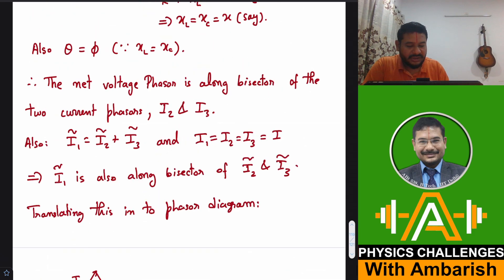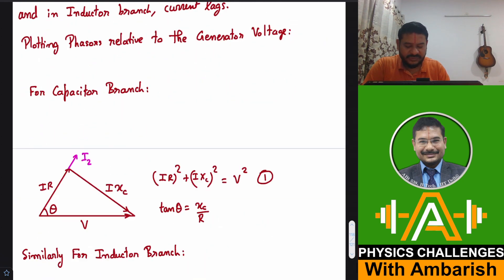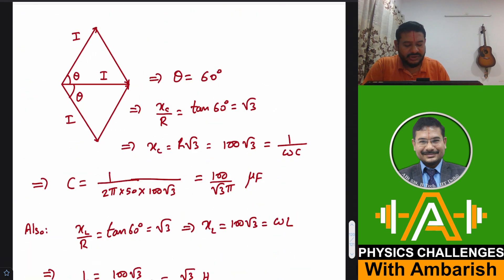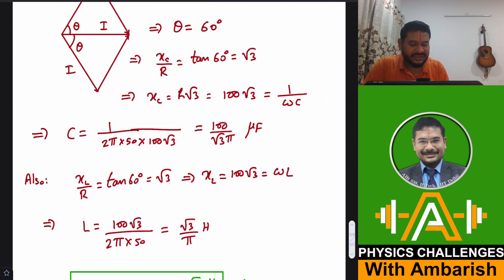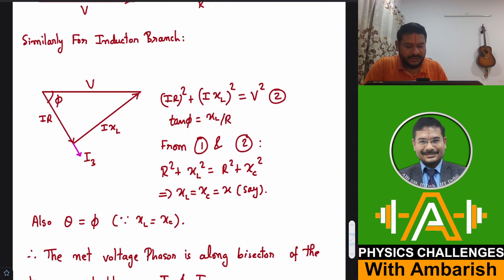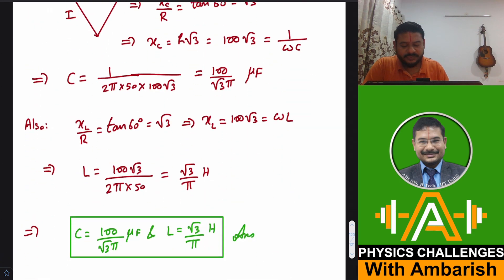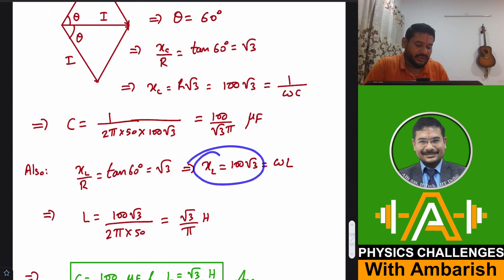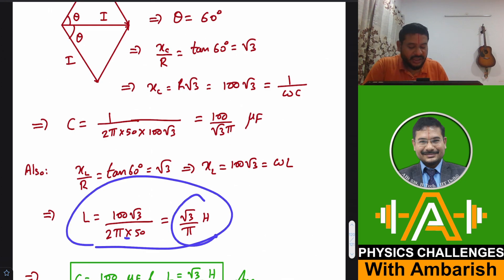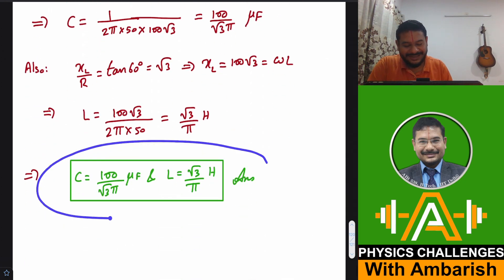And of course, XC by R was your tan theta. You see XC by R here, I wrote tan theta is XC by R. So that gives me the value of XC as R root 3, that is 100 root 3, which is 1 by omega C. And that again gives me same value of capacitance that is 100 by root 3 pi microfarad. Similarly, XL by R is also tan 60 degrees as we saw from the inductor diagram. XL by R here, you see XL by R is tan phi and phi was equal to theta. So that gives me XL is equal to 100 root 3, which is omega L and then solving for L putting the value of omega, you get again root 3 by pi Henry. So we get the same answer. So that was my analysis for this problem.